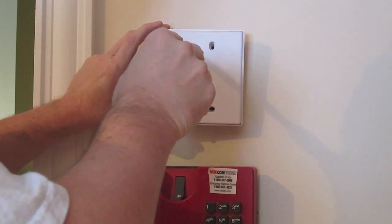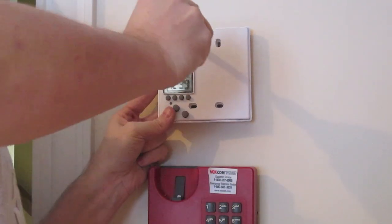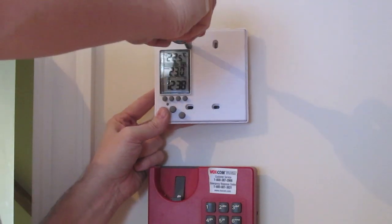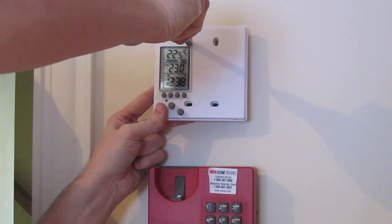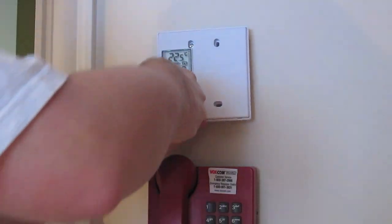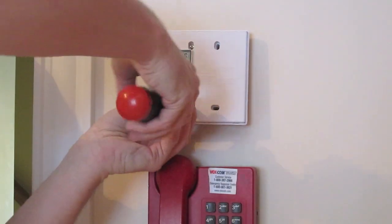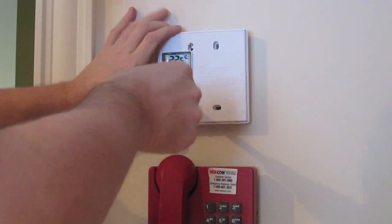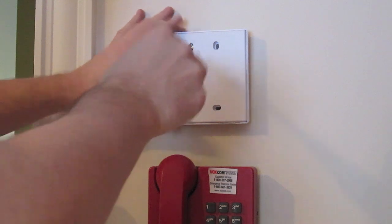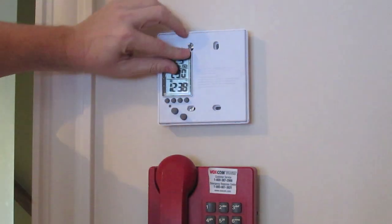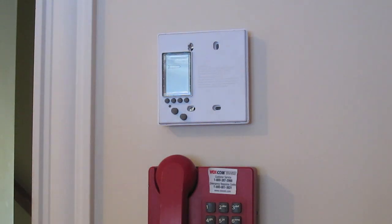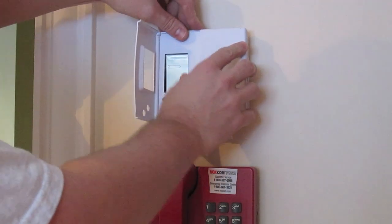Two screws come with this new thermostat. So, you want to get those screwed into the electrical box. Make sure everything's straight. Tidying things all the way up. It's nice and snug. There should be some plastic over this, it's for display. And there we go. Pop the cover back on it.